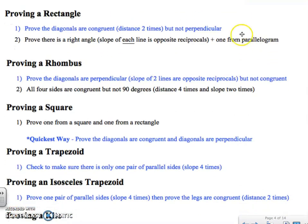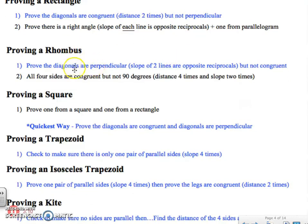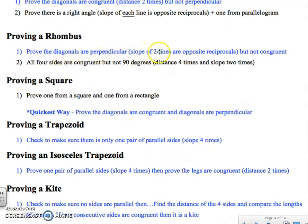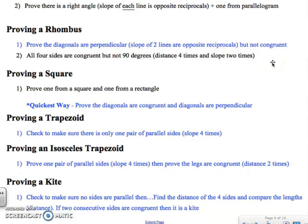To prove a shape is a rectangle, you need to prove that the diagonals are congruent (distance twice), but make sure they are not perpendicular — find the slopes and make sure they're not perpendicular. For a rhombus, make sure the diagonals are perpendicular (slopes are opposite reciprocals), and also make sure they're not congruent, because the diagonals of a rhombus are perpendicular but not congruent. Or you could prove the rhombus has four equal sides and no 90-degree angles.